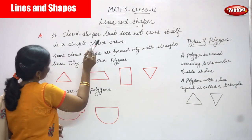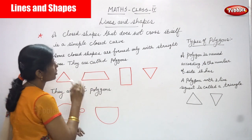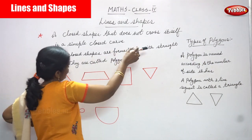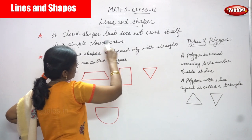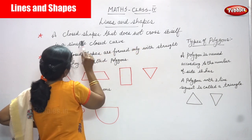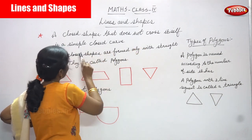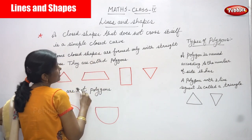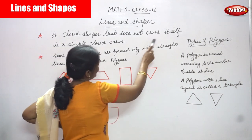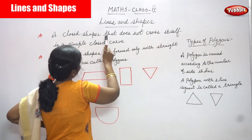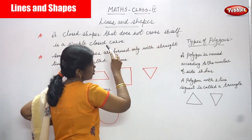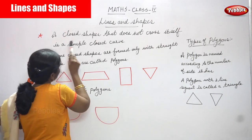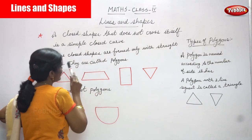A closed shape that does not cross itself will not have any crossing lines. This is called a simple closed curve — that is the meaning.